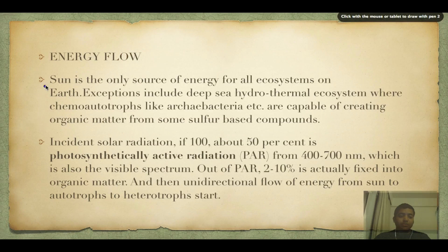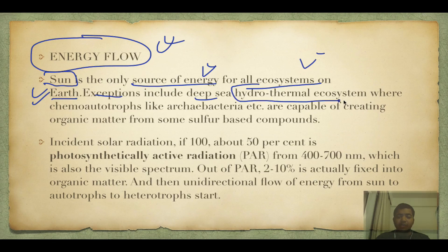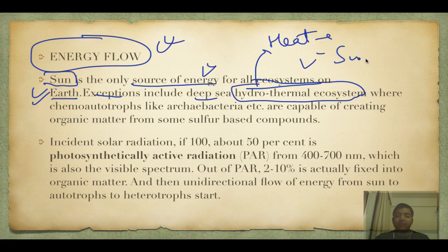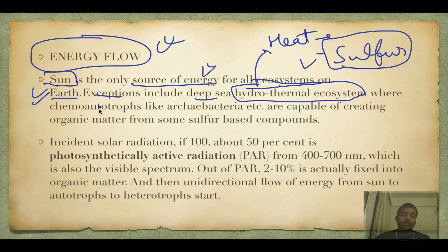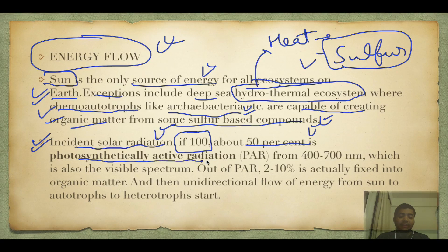Energy flow: the Sun is the only source of energy for all ecosystems on Earth. Exceptions exist — in very deep seas there are hydrothermal ecosystems where heat acts as an energy source for chemo-autotrophs, plus bacteria that act on sulfur compounds. But these are negligible. Of incident solar radiation, assuming 100 units, only 50% is photosynthetically active radiation (PAR), captured in the 400–700 nanometer wavelength range.